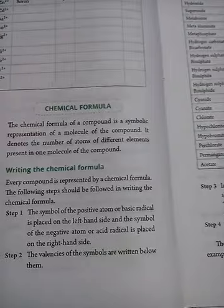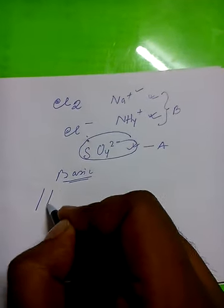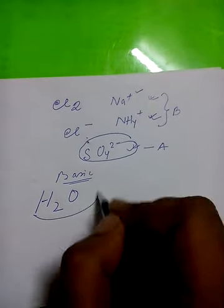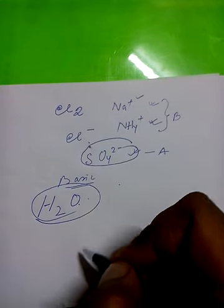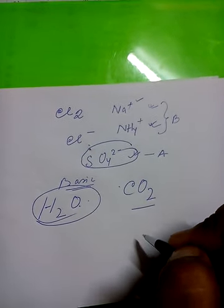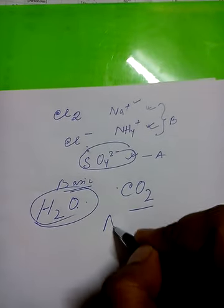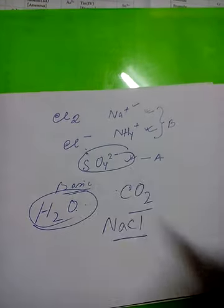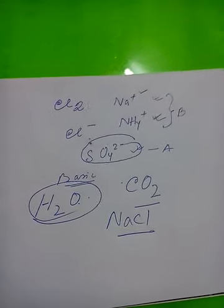For example, if you write the formula of water H₂O, this represents one molecule of water. You are writing CO₂ — this is also a symbol. Writing NaCl for salt — these are all symbolic representations or chemical formulas.